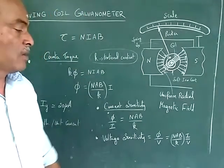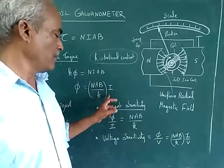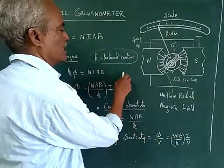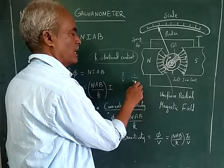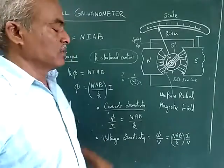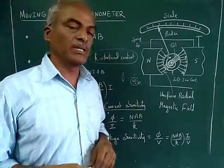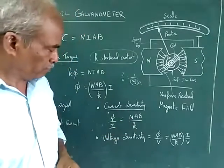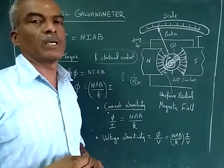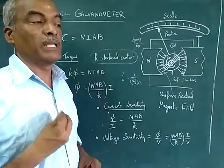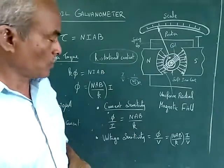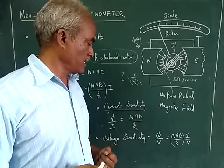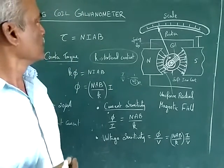Current sensitivity equals NAB / k. For voltage sensitivity, φ / V means we divide the equation by V, giving (NAB / k) × (1 / R), where R is the resistance of the coil. So if resistance of the coil increases, voltage sensitivity decreases. To improve voltage sensitivity, we must choose a material with minimum resistance. Current sensitivity and voltage sensitivity have different formulas and are not equal.